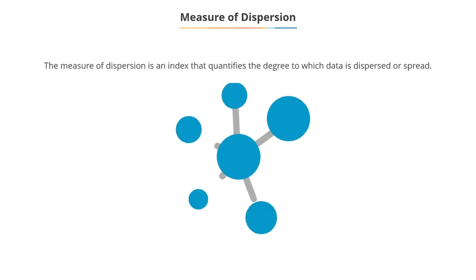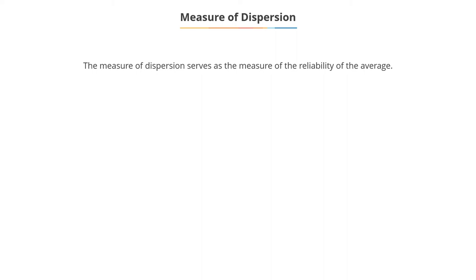The definition of measure of dispersion states that it is an index that quantifies the degree to which data is dispersed or spread. Therefore, it serves as a measure of the reliability of the average.